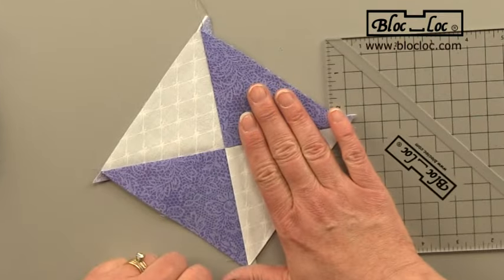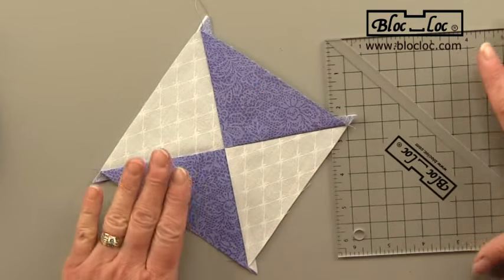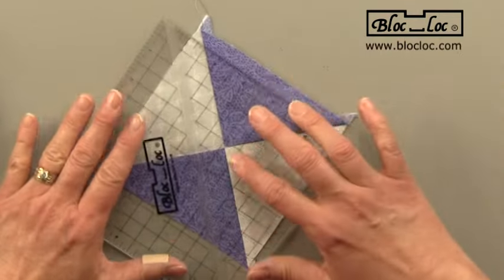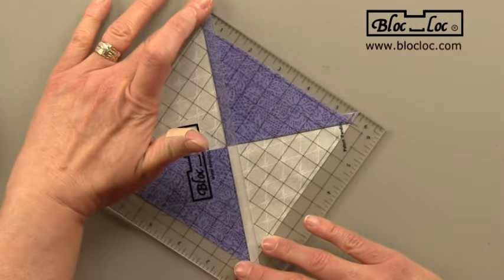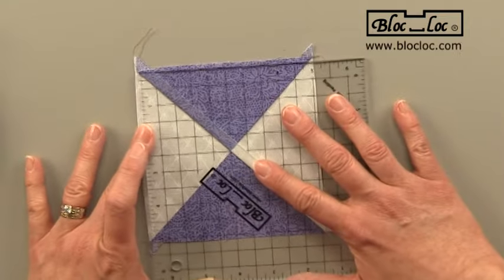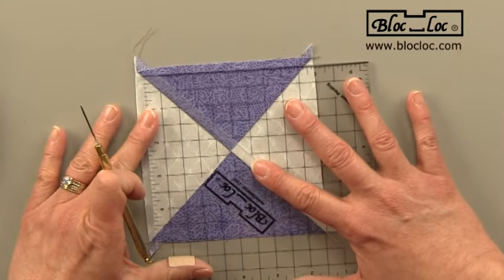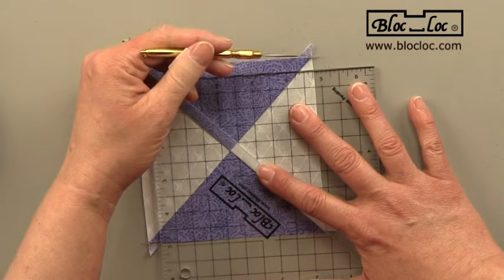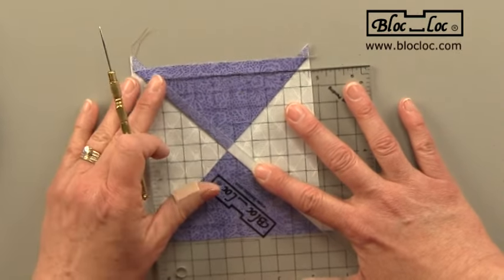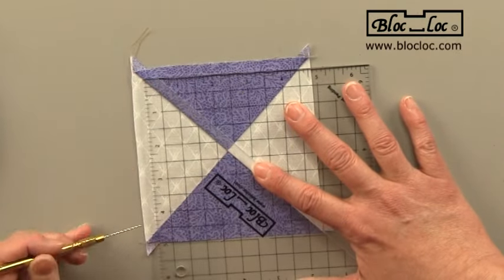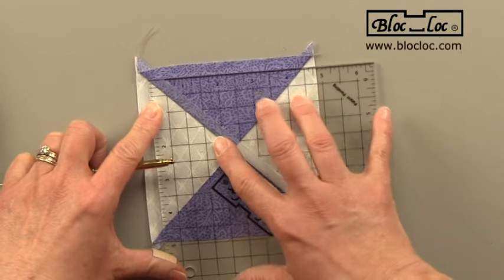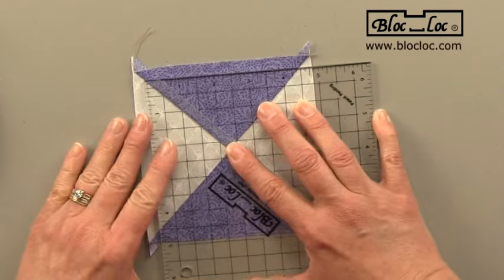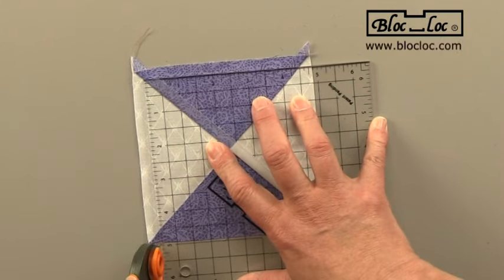Now that the seam is on this side of the quarter square triangle, the logo Block Lock goes on the low side. And again, you're locking on to that very last diagonal seam. I'll slide the ruler down until the size I want is not appearing out here, but rather on this seam and this seam. And I just need to move it down just a little bit more. And once I've got that, I'll make my clean up cut.